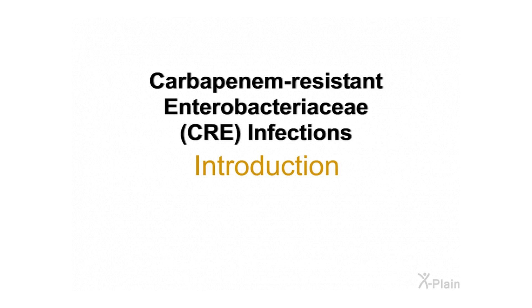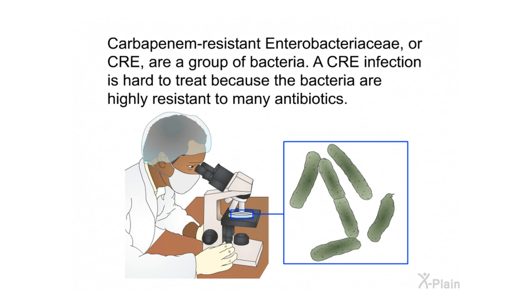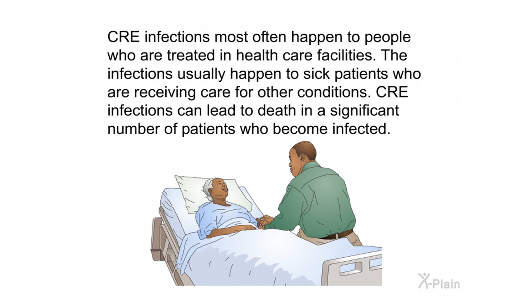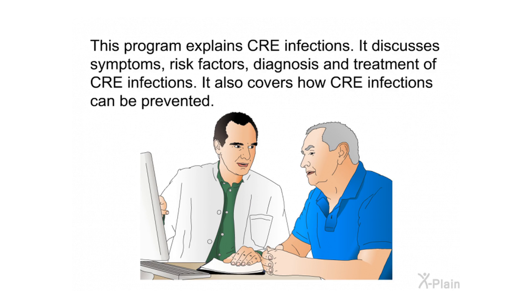Carbapenem-resistant Enterobacteriaceae, or CRE, are a group of bacteria. A CRE infection is hard to treat because the bacteria are highly resistant to many antibiotics. CRE infections most often happen to people who are treated in health care facilities. The infections usually happen to sick patients receiving care for other conditions. CRE infections can lead to death in a significant number of patients who become infected. This program explains CRE infections, discussing symptoms, risk factors, diagnosis, treatment, and prevention.